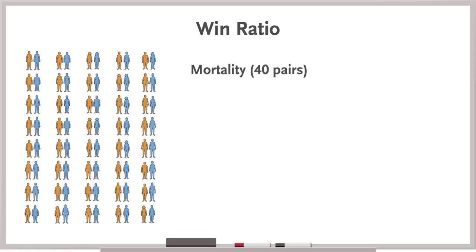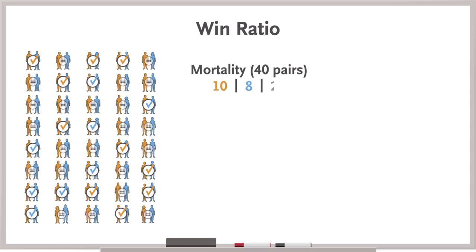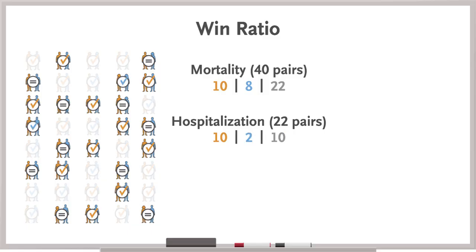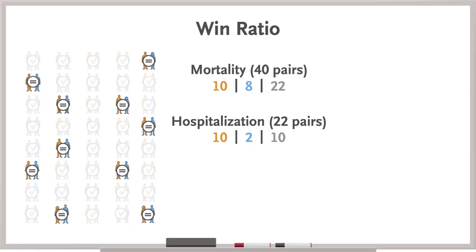You start with mortality. In 10 pairs, the new medication arm wins. In 8 pairs, the new medication arm loses. And for 22, it's a tie. For the 22 ties, you move on to the second outcome in the hierarchy: did participants have one or more heart failure hospitalizations? Of those 22, you observe 10 wins for the new medication, 2 losses for the new medication, and 10 ties. For those 10 ties, who won on the quality of life analysis? You see 4 wins for the new medication, 4 losses for the new medication, and 2 ties.